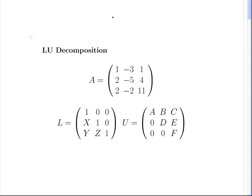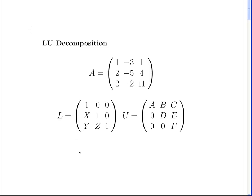This is LU decomposition. What we're going to do here is decompose matrix A into two matrices L and U. The thing about L and U is that multiplied together they will give us A. So L times U equals A.